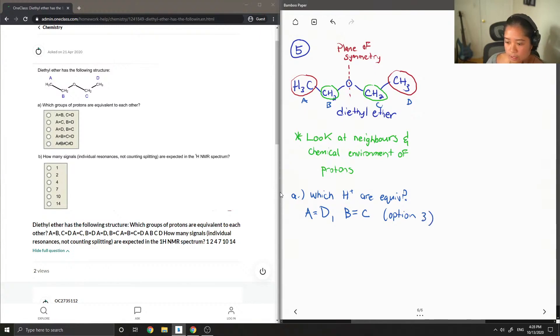So lastly, it says how many signals are expected in the HNMR spectrum. Since there are two distinct sets of protons, therefore the number of signals will also be 2.